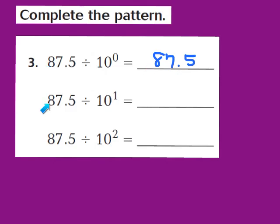Now take a look at the second part in this problem. We have 87 and 5 tenths divided by the first power of 10. My exponent is a 1, so I'm going to write down my 87 and 5 tenths and move my decimal one place to the left. Our answer now turns out to be 8 and 75 hundredths.